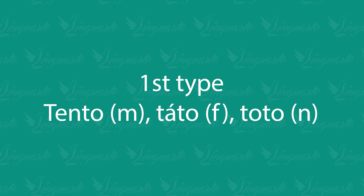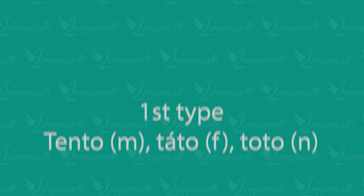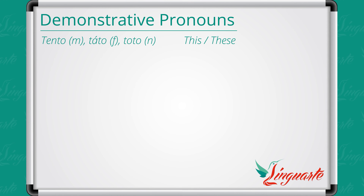First type: Tento — masculine, Táto — feminine, Toto — neutral. These demonstratives are used for objects or people that are nearby the person speaking. These pronouns correspond to the English 'this' or 'these.'